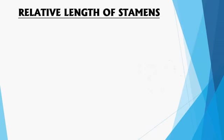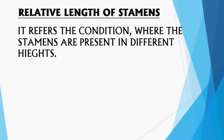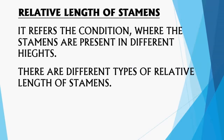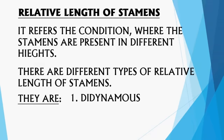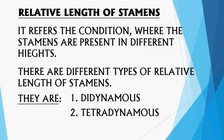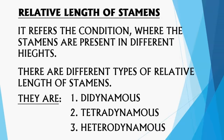The next variation is the relative length of stamens. It refers to the condition where stamens are present at different heights. There are different types: didynamous, tetradynamous, and heterodynamous.